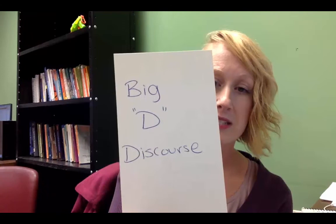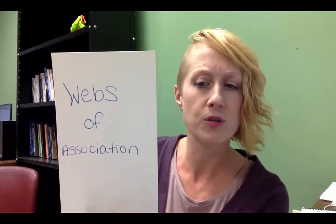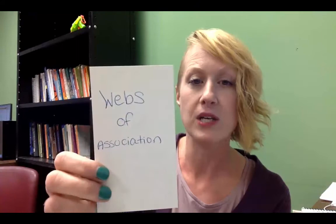Going back to the idea that Big-D Discourse is examining interactions, Gee brings up webs of association and says that different discourse communities can intersect. It's important to see that we aren't bringing a single identity but multiple identities to a situation, and we should look at how those different identities interact with one another in the discourses that we have. He also presents other terms that can be used, and it's important to understand that these discourse communities interact and intersect.